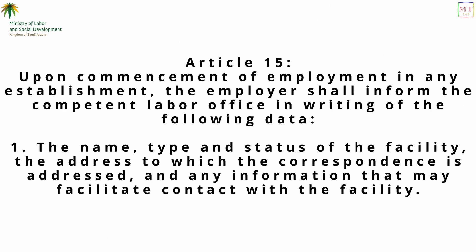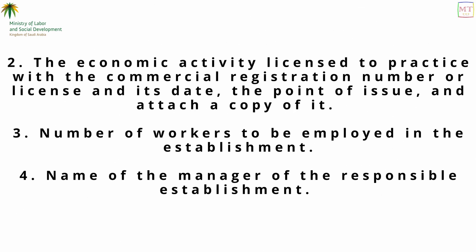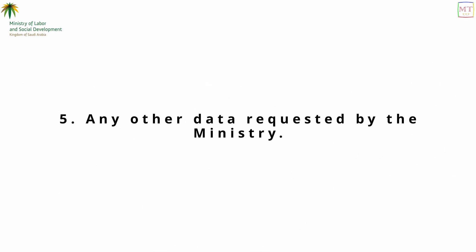Article 15: Upon commencement of employment at any establishment, the employer shall inform the competent labor office in writing of the following data: 1. The name, type, and status of the facility, the address to which correspondence is addressed, and any information that may facilitate contact with the facility. 2. The economic activity licensed to practice, with the commercial registration number or license and its date, the point of issue, and a copy attached. 3. Number of workers to be employed in the establishment. 4. Name of the manager of the responsible establishment. 5. Any other data requested by the Ministry.